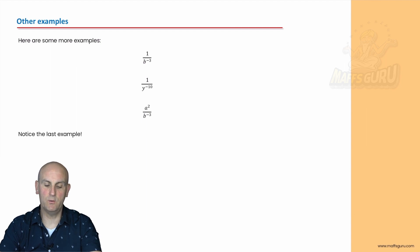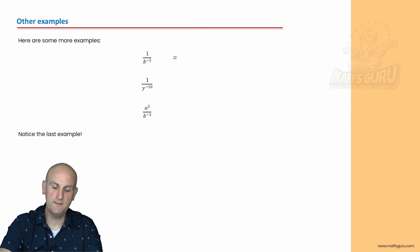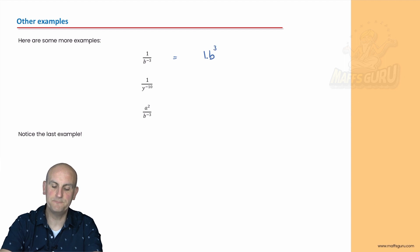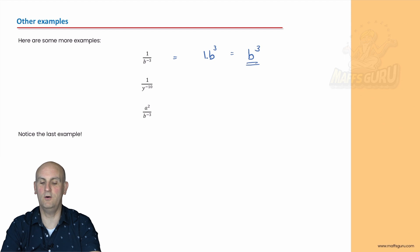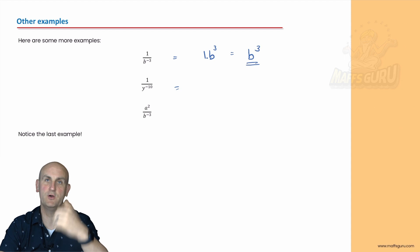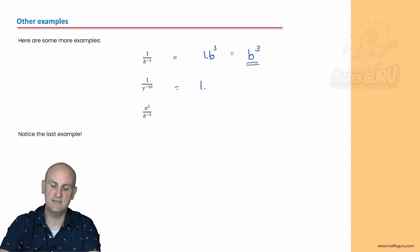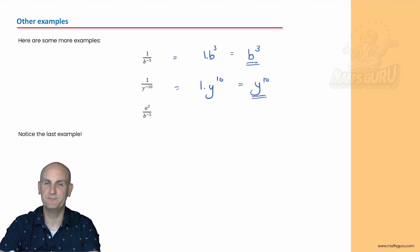A few more examples. One on b to the power of minus three — the one is already there, leave it on the top. b to the minus three: move from the bottom, move it up to the top, ditch the minus sign. One times b cubed is simply b cubed. One over y to the minus ten — the one stays there, the y to the minus ten becomes y to the ten.